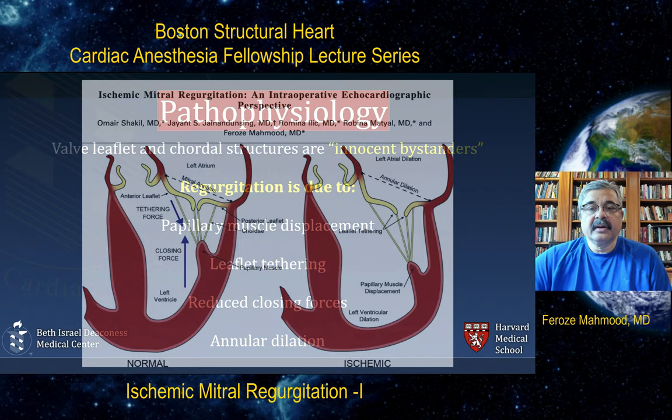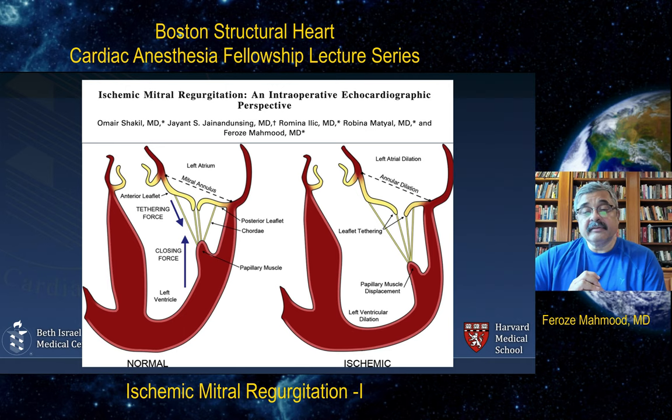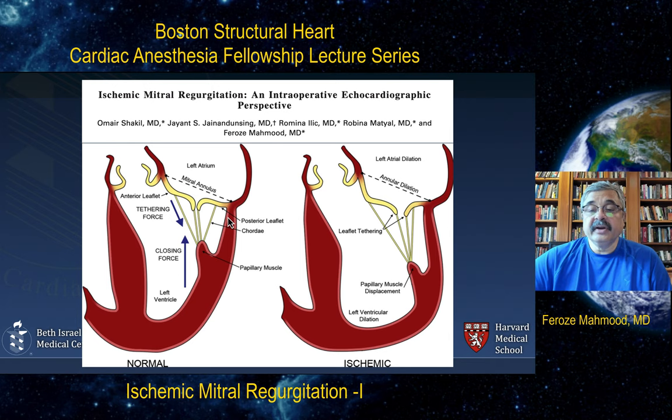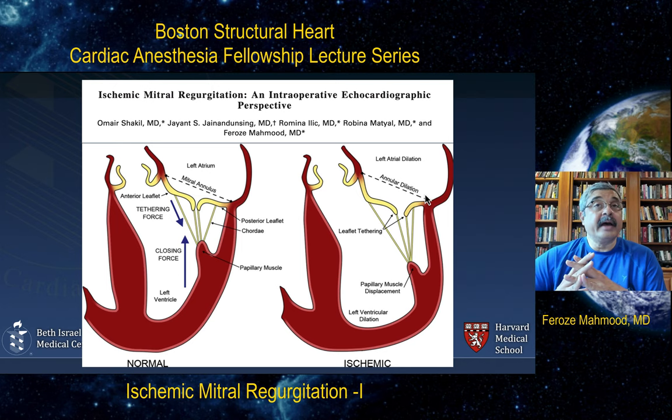Mitral valve competence is essentially a balance between closing and tethering forces. As long as the closing forces override the tethering forces, the mitral valve remains competent. As soon as the tethering forces — because of LV remodeling — pull the leaflets from more apical dilation or lead to annular dilation, leaflet tethering and annular dilation leads to malcoaptation and therefore significant mitral regurgitation. It is an imbalance between the closing and the tethering forces of the mitral valve.